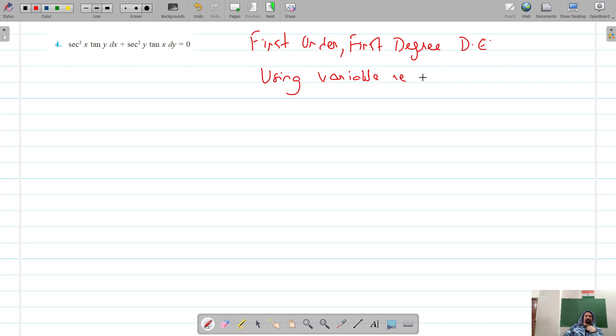Using variable separable method, let's write what is given to us. Secant square x into tan of y into dx plus secant square y into tan x into dy is equal to 0, and this should be secant square y into tan x into dy.